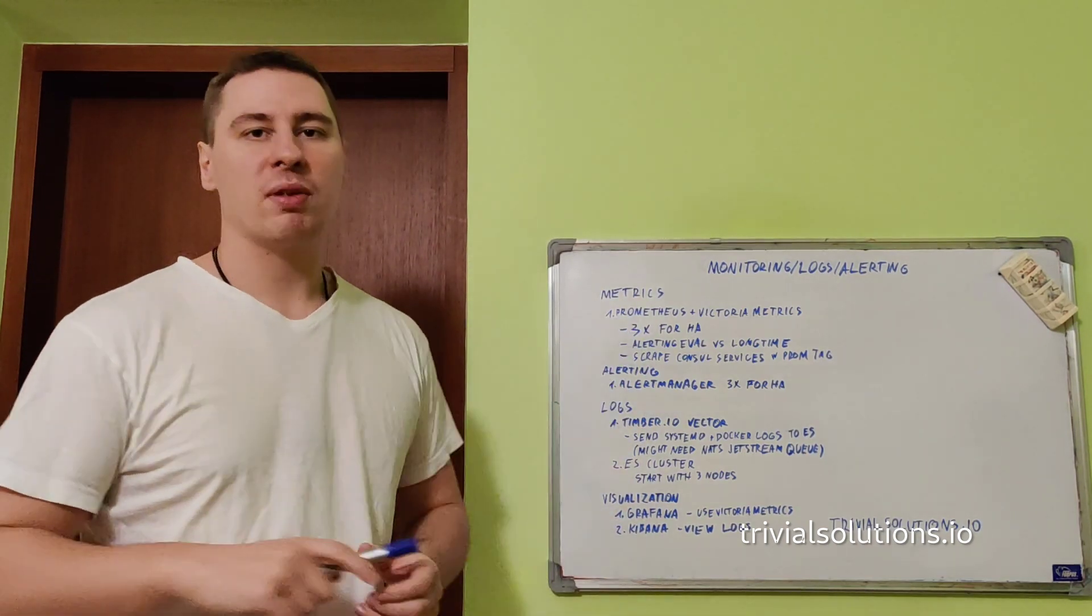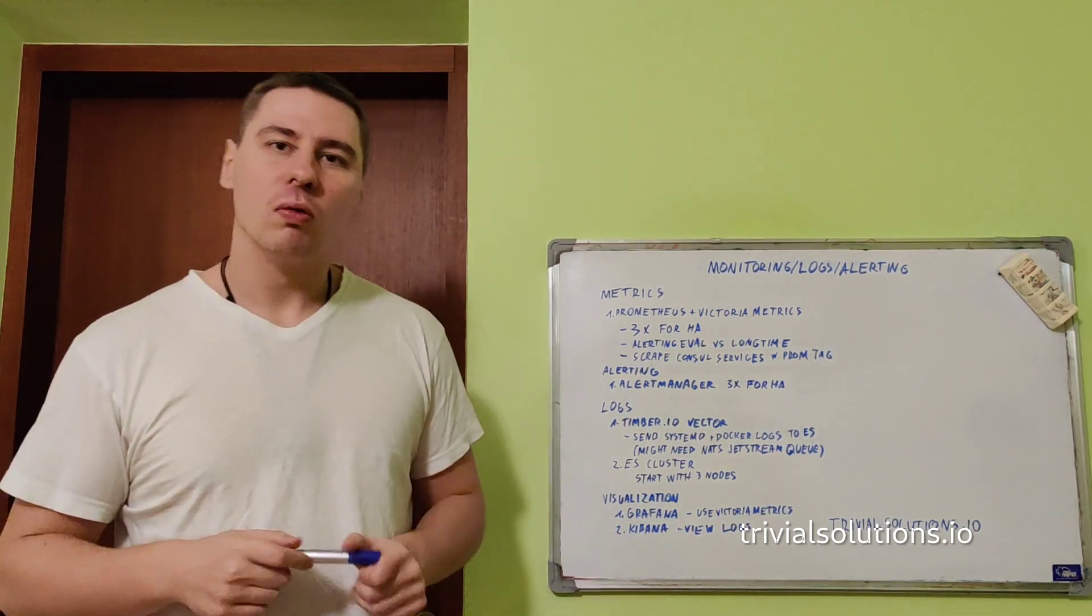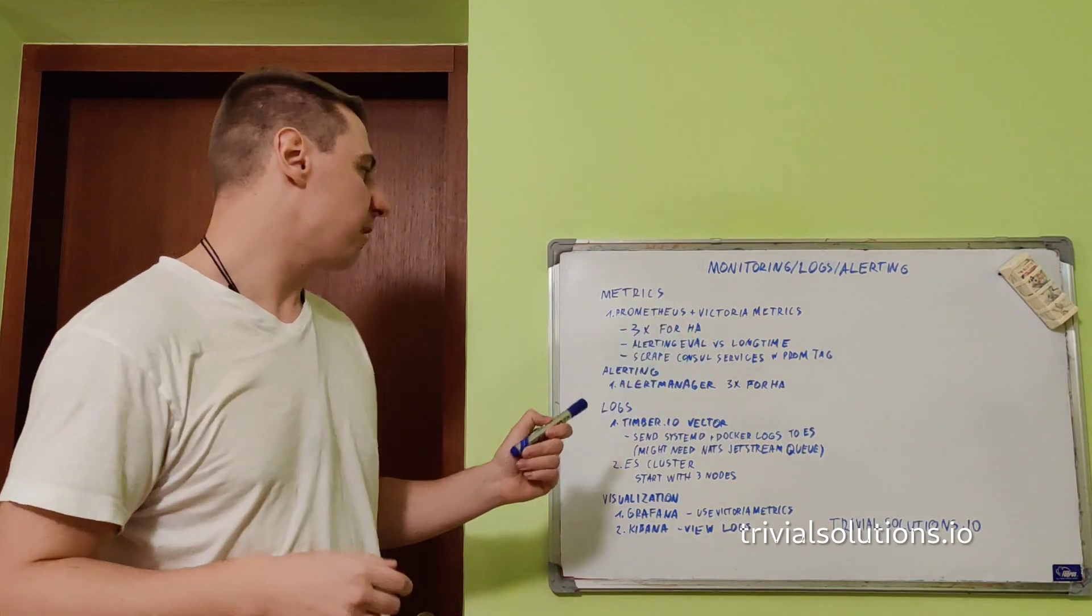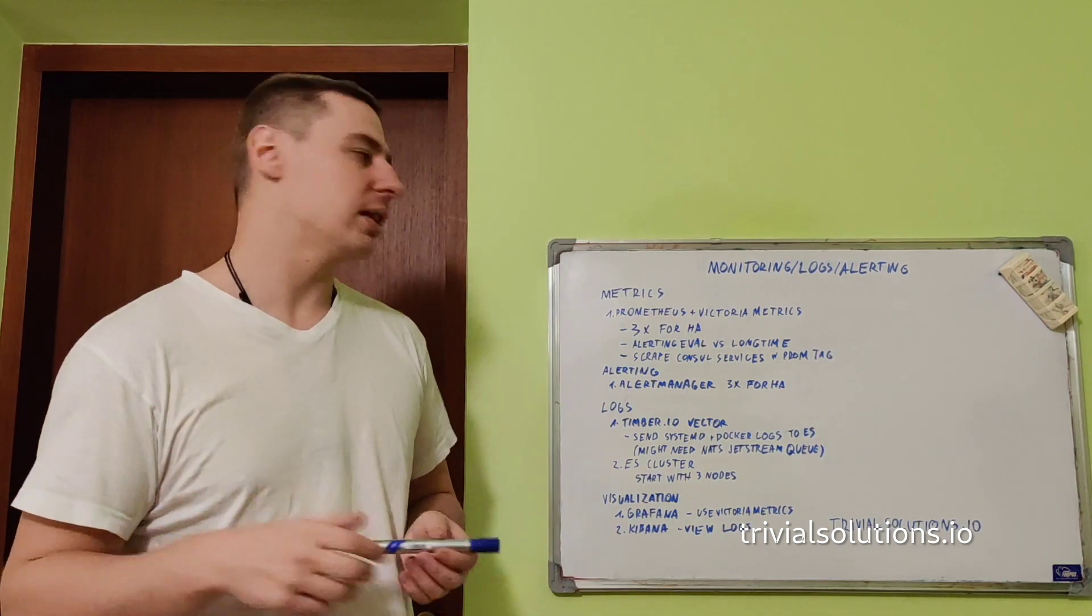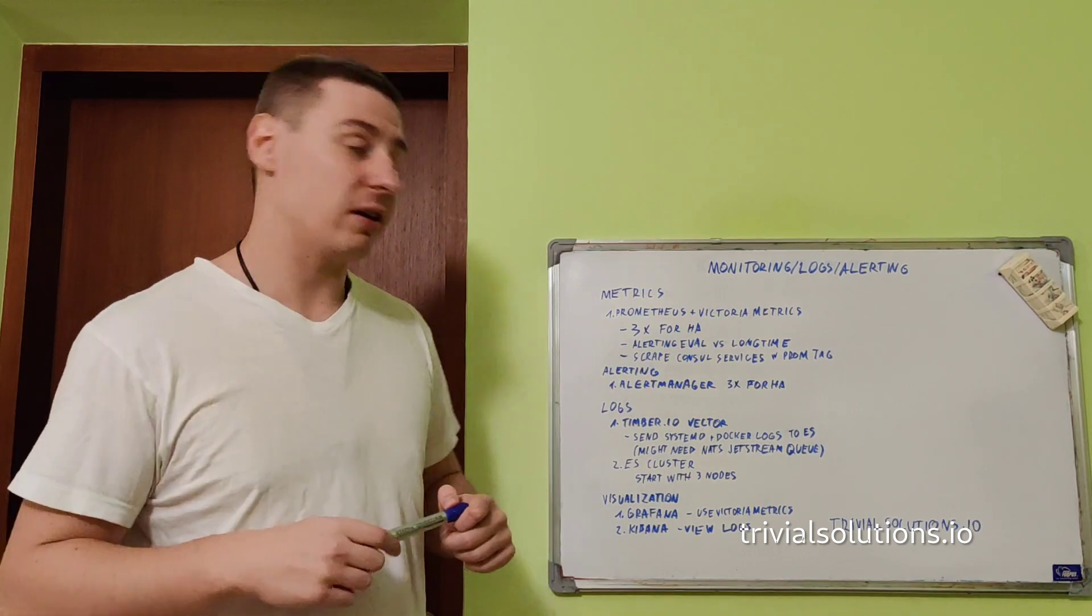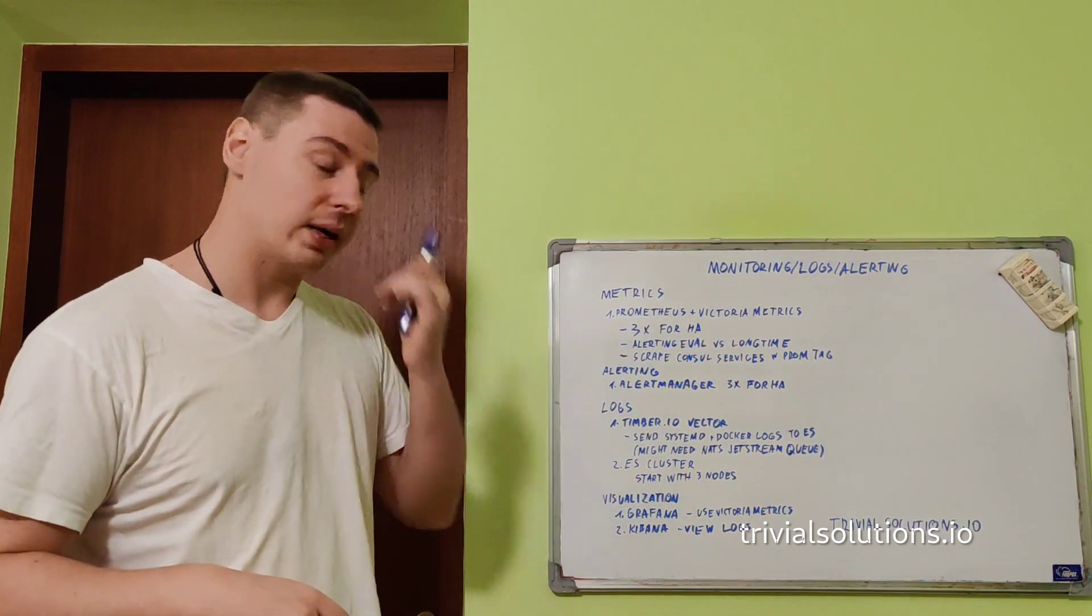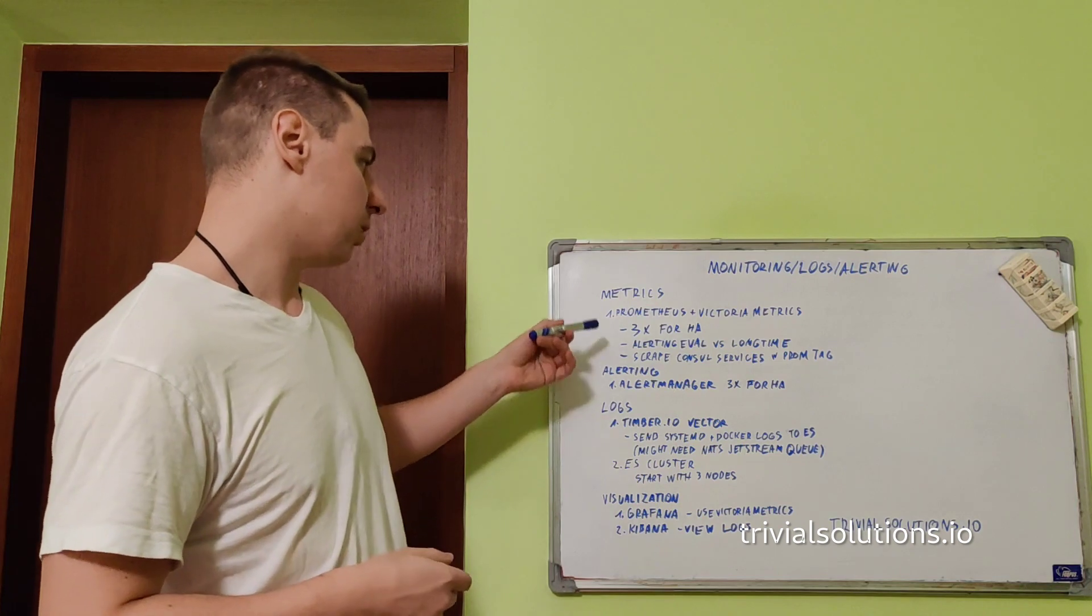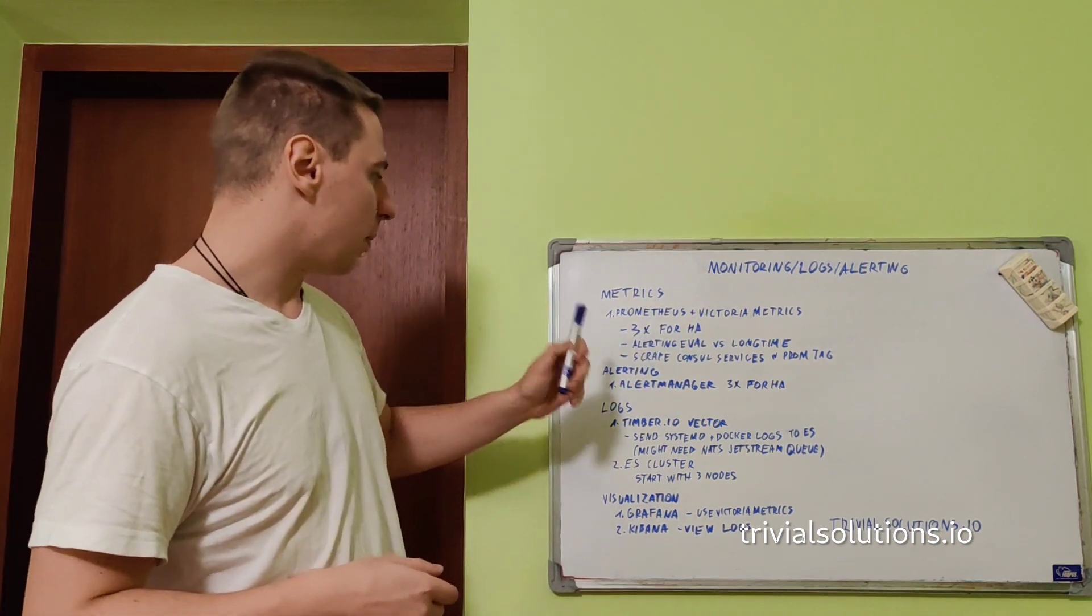Some people say Prometheus and Victoria Metrics are the same, but I use them for different things. By default, Prometheus takes more storage and is slower to query. Prometheus only evaluates alerts—alert conditions—and it has little data, like 14 days by default. For long-term storage and for querying for visualization, I use Victoria Metrics.